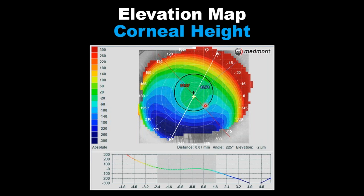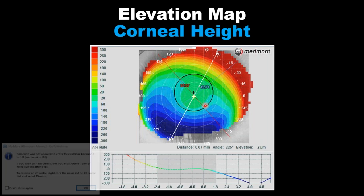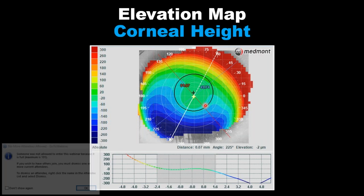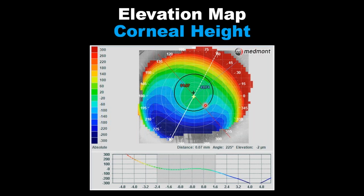One of the maps that we don't use too often but actually has a great deal of value is called the elevation map. What the elevation map describes is where the eye is high (red) and where the eye is low (blue). Where a contact lens will land is the red; where a contact lens will vault or lift is the blue.